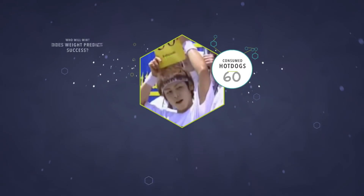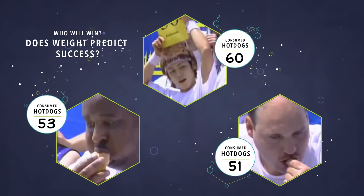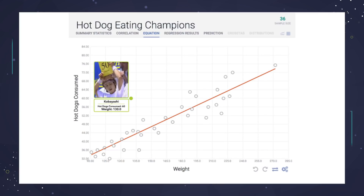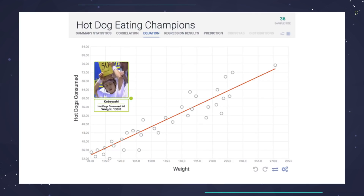Now that we've seen the power of outliers, your next question might be: can I just remove the outlier? It's important to remember we're typically using regression to make a prediction about the real world. In the real world, we see guys who are 130 pounds eat 60 hot dogs. So if you want to predict hot dog eating based on weight, removing an outlier without thought can make your predictions worse.